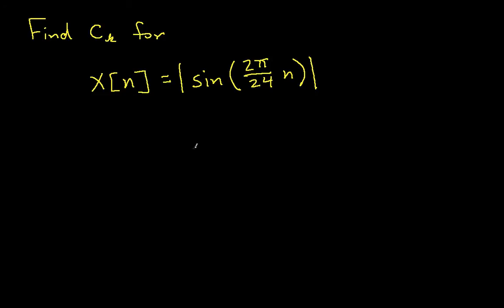Now it would be possible to just take these x of n's, plug this x of n into the equation that we have for c sub k where you just sum up x of n times e to the minus j, all that stuff, and get the c sub k's. But that would be inelegant.